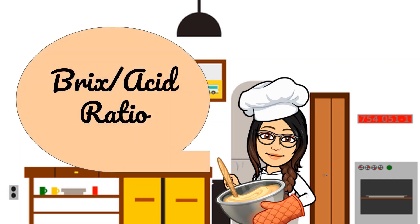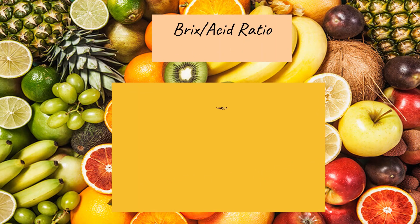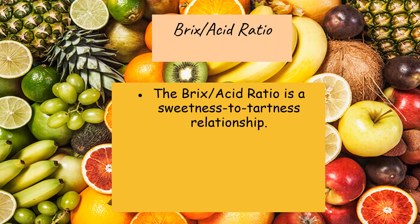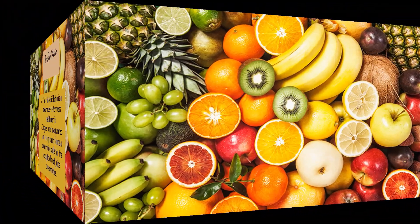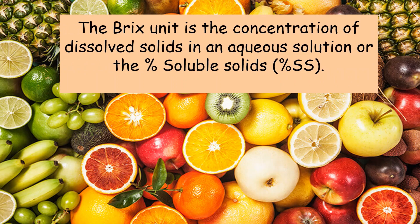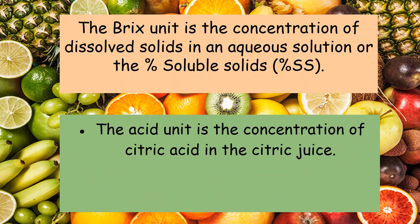BRICS-Acid Ratio. The BRICS-Acid Ratio is the sweetness to tartness relationship. It gives a ratio compared with unity, which forms a comparative scale for the acceptability of juice concentrates. The BRICS unit is the concentration of dissolved solids in an aqueous solution, or the percent soluble solids, while the acid unit is the concentration of citric acid in the citric juice.